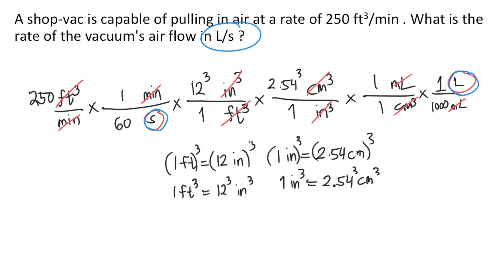Since we have arrived at our desired units, we can now solve. Using a calculator: 250 × (1/60) × 12³ × 2.54³ × (1/1) × (1/1,000). The answer, rounded off, is approximately 118 liters per second. This is the answer to the question.